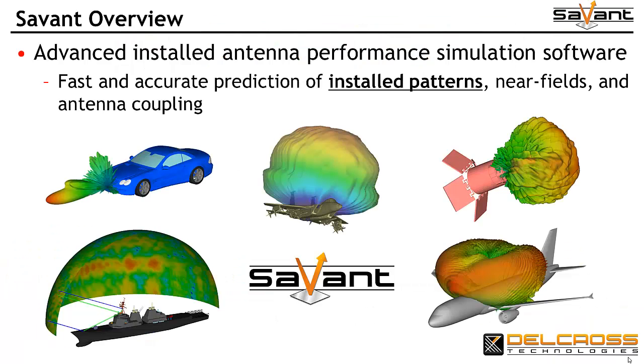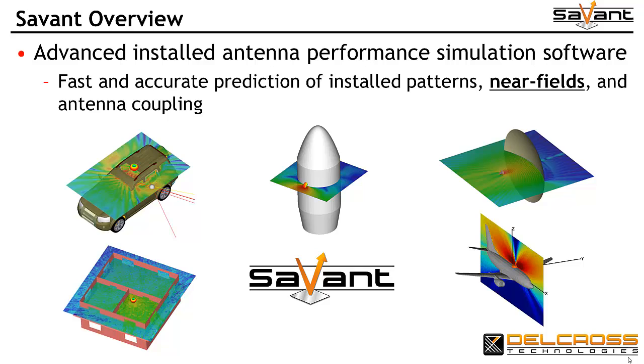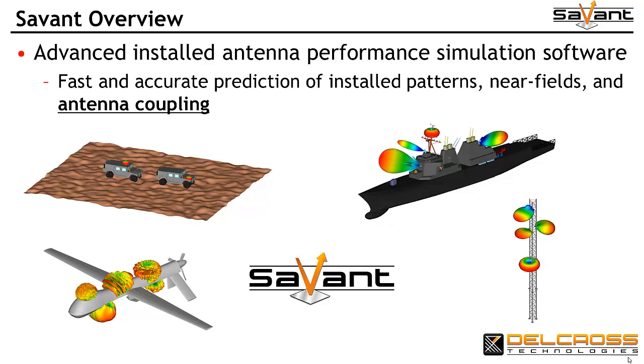Savant is a commercial electromagnetic analysis software product aimed at solving electrically very large problems using modest computer systems. Savant is geared toward analysis of installed antenna patterns, near-field radiation modeling, and accurate prediction of antenna-to-antenna coupling for application geometries that may be tens, hundreds, or thousands of wavelengths in size.